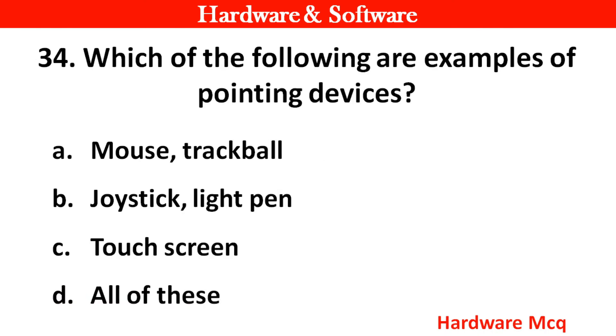Question 32: Which of the following are examples of pointing devices? Right answer is option D — All of these.